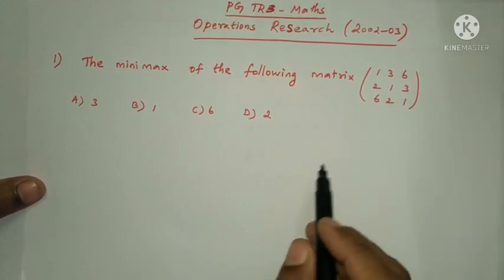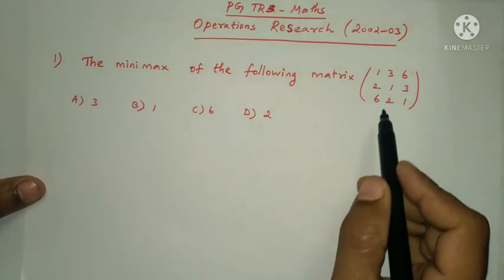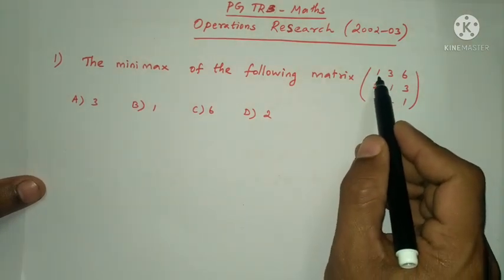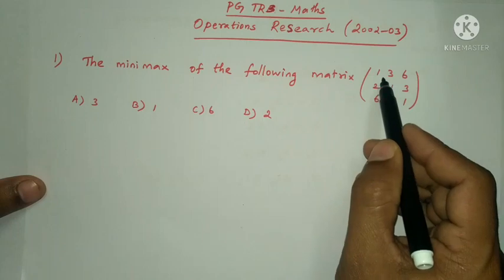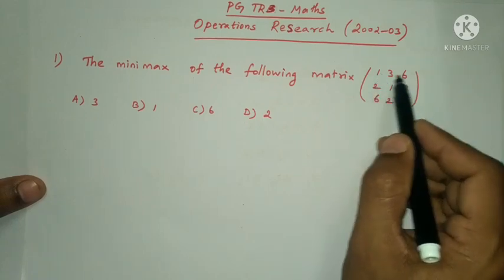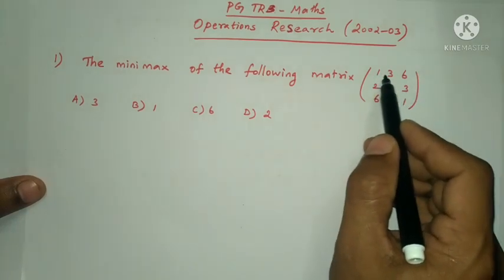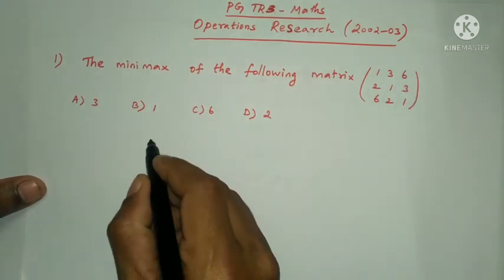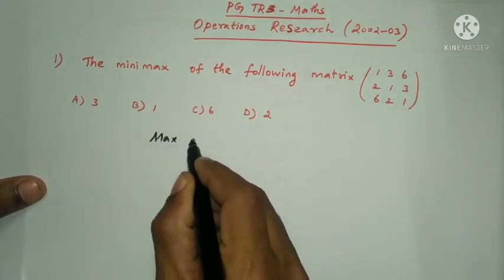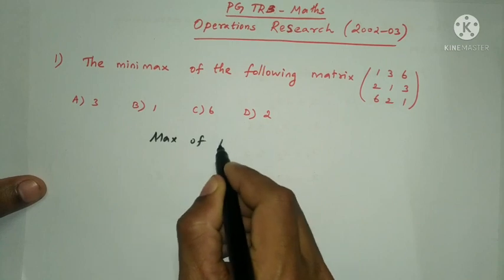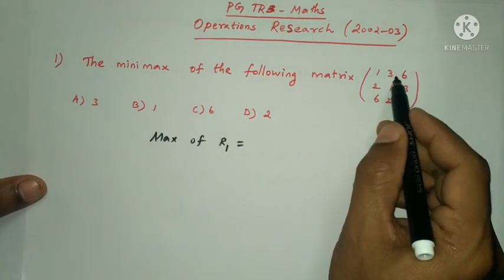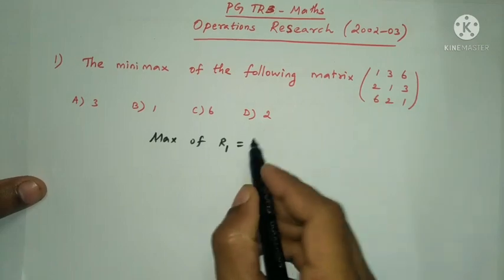First, find the answer row-wise, then column-wise, then row-wise again. In the first row, find the maximum value. The maximum of R1 in the first row is 6.